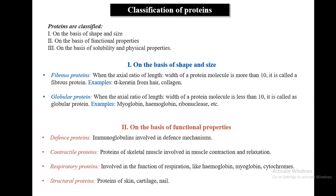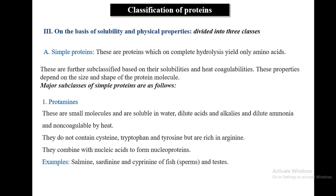Based on functional classification: defense proteins such as immunoglobulins are involved in the defense mechanism. Contractile proteins are the major proteins of skeletal muscle involved in contraction and relaxation. Respiratory proteins involved in the function of respiration include hemoglobin, myoglobin, and cytochromes. Structural proteins are proteins of skin, cartilage, and nail.